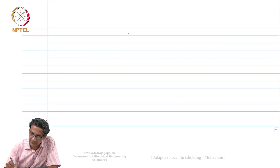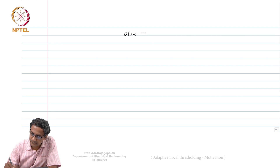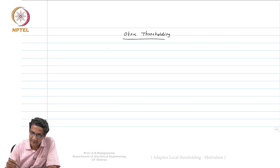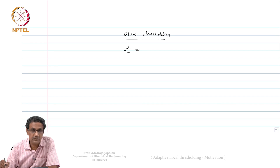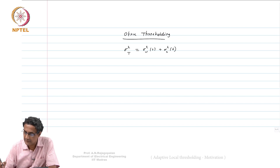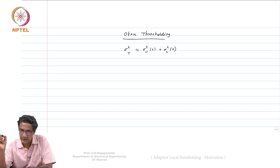We saw that with respect to the OTSU method, which is a thresholding method. For a threshold t, we showed that σ²_T, the total variance which is independent of t, equals σ²_W(t) plus σ²_B(t), where W is the within-class variance and B is the between-class variance.